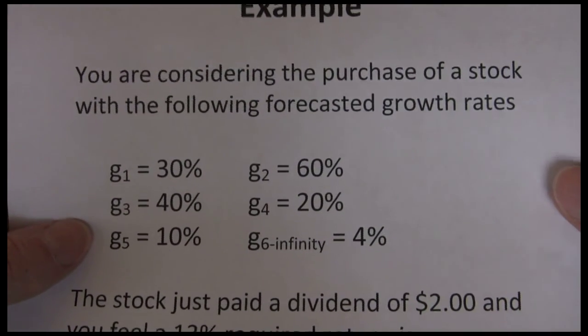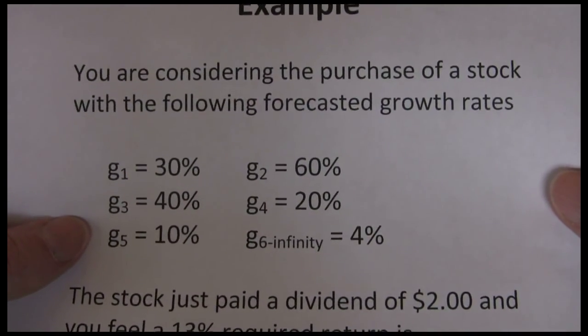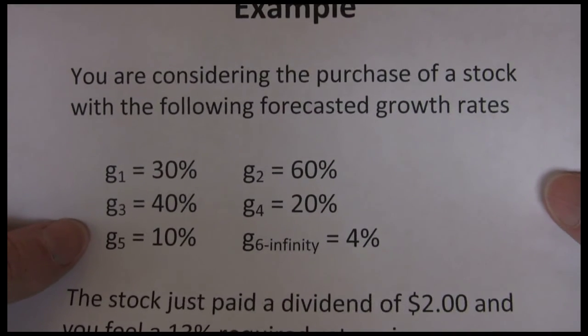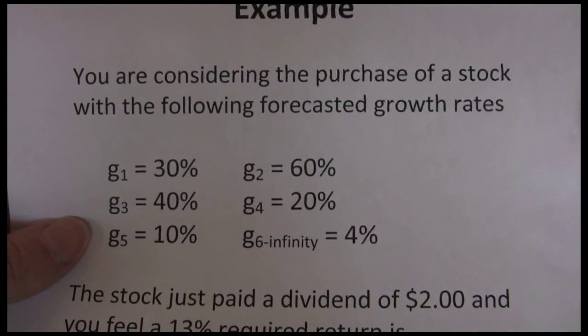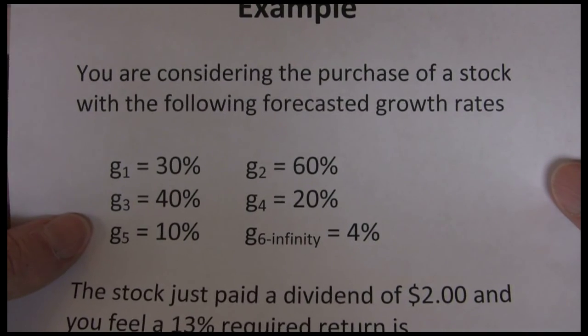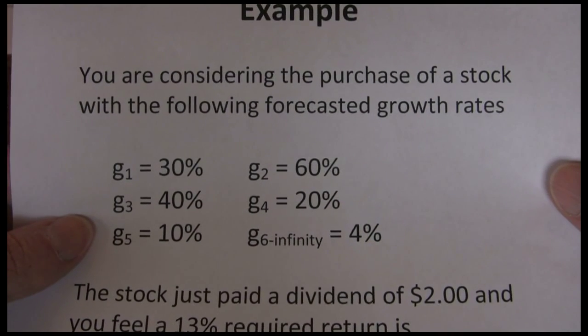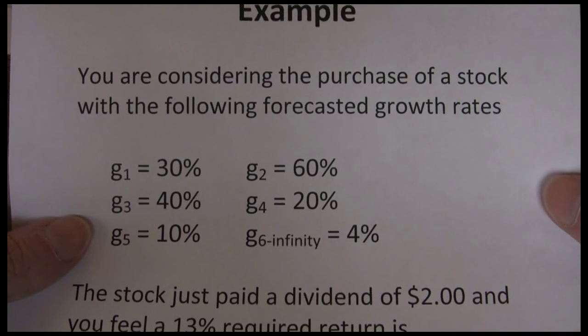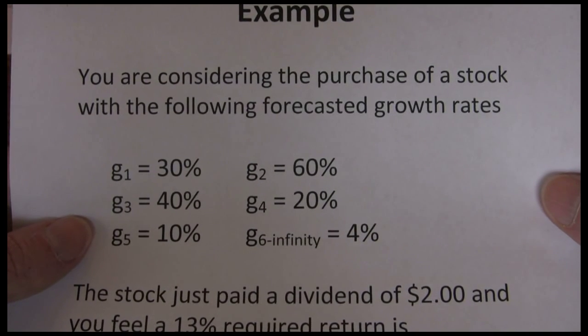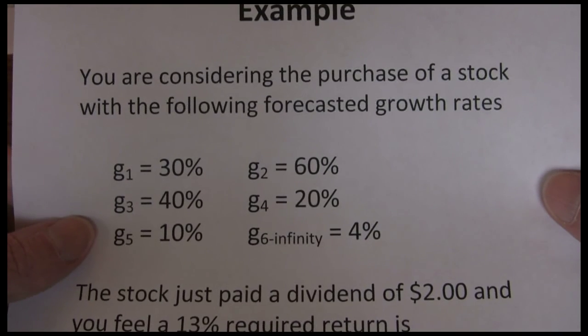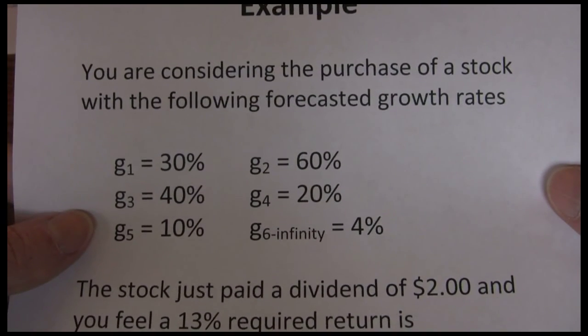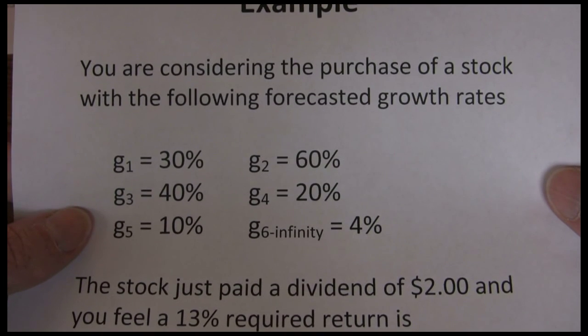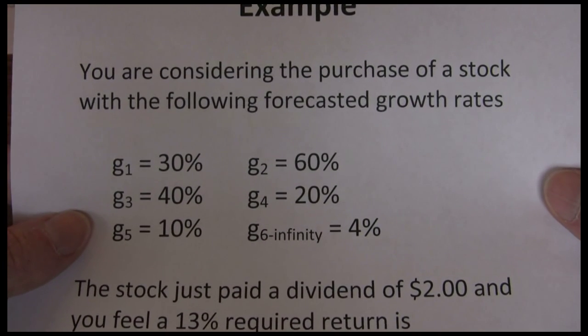The reasoning behind this is twofold. One, we can't keep forecasting growth rates forever or we'd never stop. We have to get an ending point to start doing some calculations. Second is that predicting growth rates for companies and stocks is very difficult even in the near term. By the time we get five, six, seven years out in the future it's almost impossible to predict what growth rates are going to be on an individual year-to-year basis.